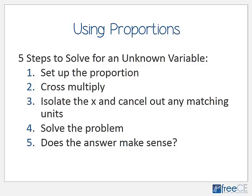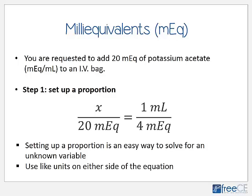When using proportions, there are five steps to solve for an unknown variable: first, set up the proportion; second, cross multiply; third, isolate the x and cancel out matching units; fourth, solve the problem; and fifth, always ask yourself if the answer makes sense. We'll use these five steps over and over throughout this program.